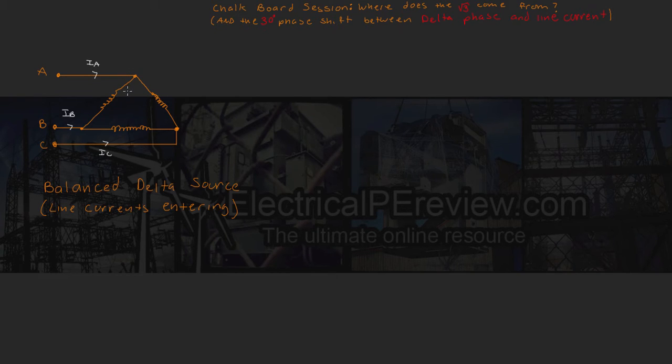Over here we've got our delta phase current between A and B circulating in the delta. So this phase current is going to be Iab. Down here we've got our line current from B to C as our phase current circulating in this side of the delta as Ibc. And then this phase current right here, we're just going to draw on the other side for room. From C down here to A up here, this is going to be our phase current Ica circulating in the delta.